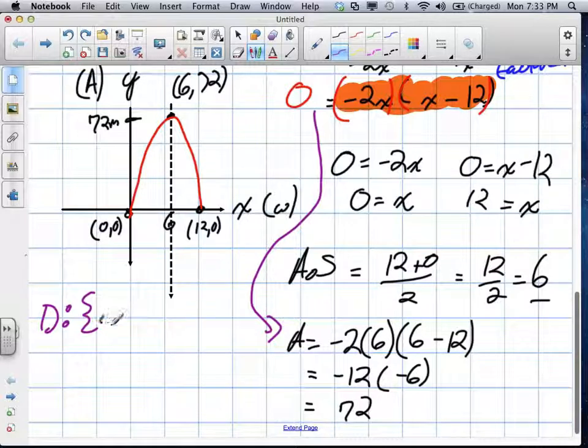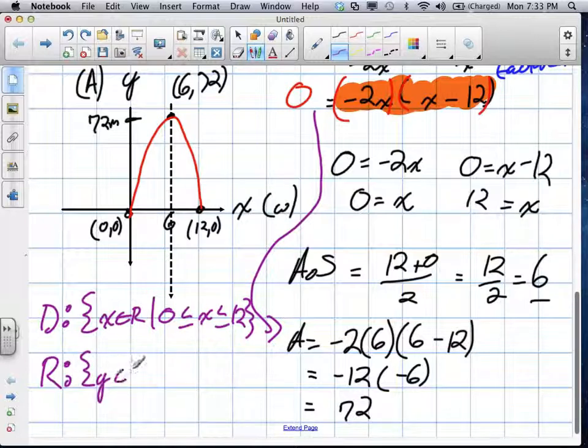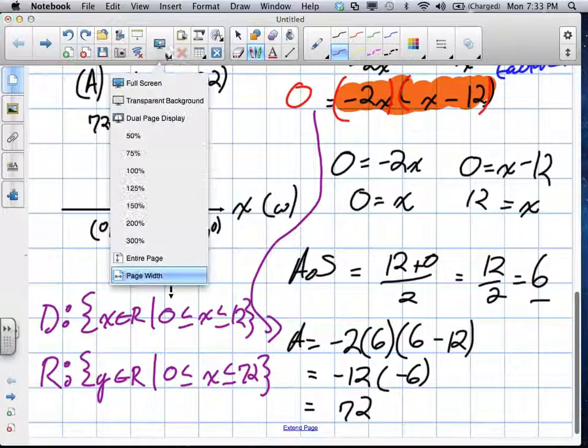So our domain is x is a set of all real numbers. Because we could choose any width we want. Yeah. As long as it's between what? 0 and 12. That's right. So that's the domain of our function. The range of our function would be the lowest area, which would be what? 0. So y is every real number as long as it's between 0 and what's our max? And 72. So that would be the domain range of this area function. We had to make it into a quadratic so we could make sense of the domain range.